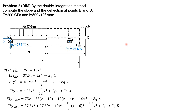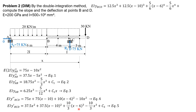Integrating again: EI Y BCD equals 12.5X cubed plus 12.5(X minus 10) cubed plus 5/6 (X minus 6) to the 4th minus 5/6 X to the 4th plus C sub 3 times X plus C sub 4. There is a C sub 4 because we are working with segment BCD; the origin is still at A but the segment starts at B, so an expected value for C sub 4 exists.